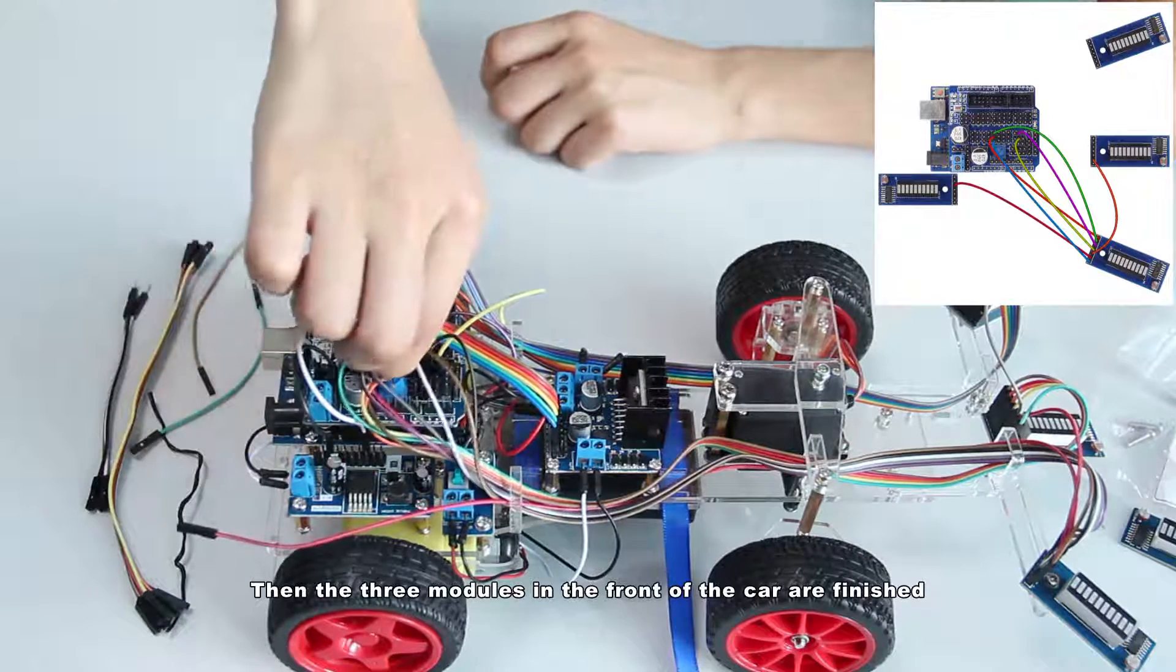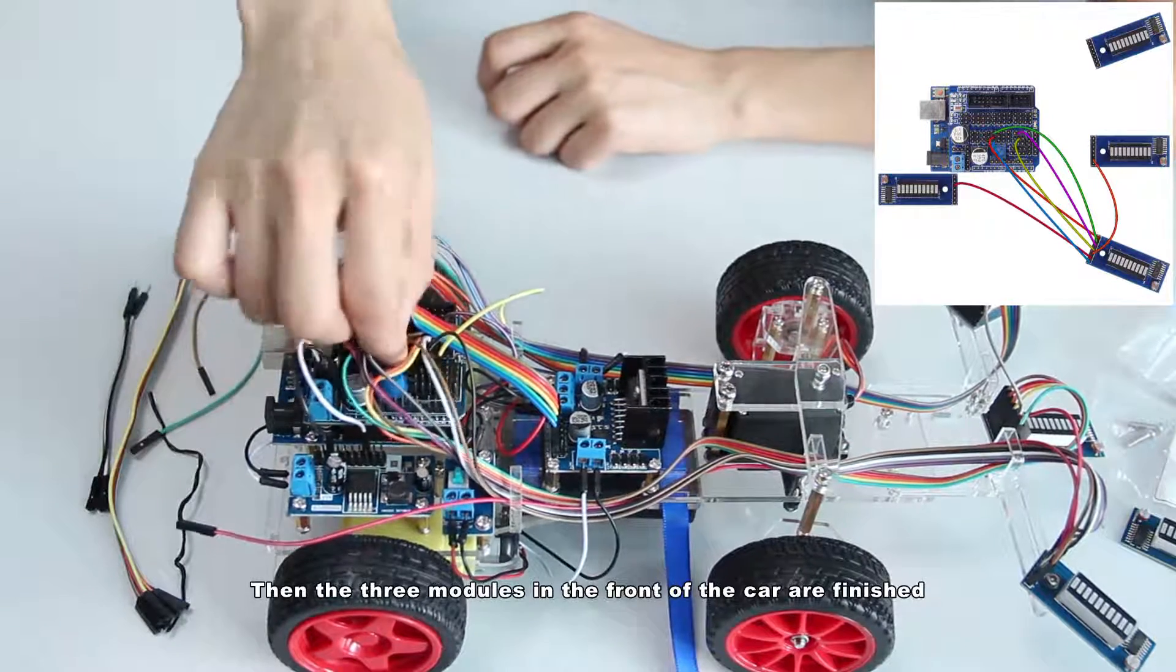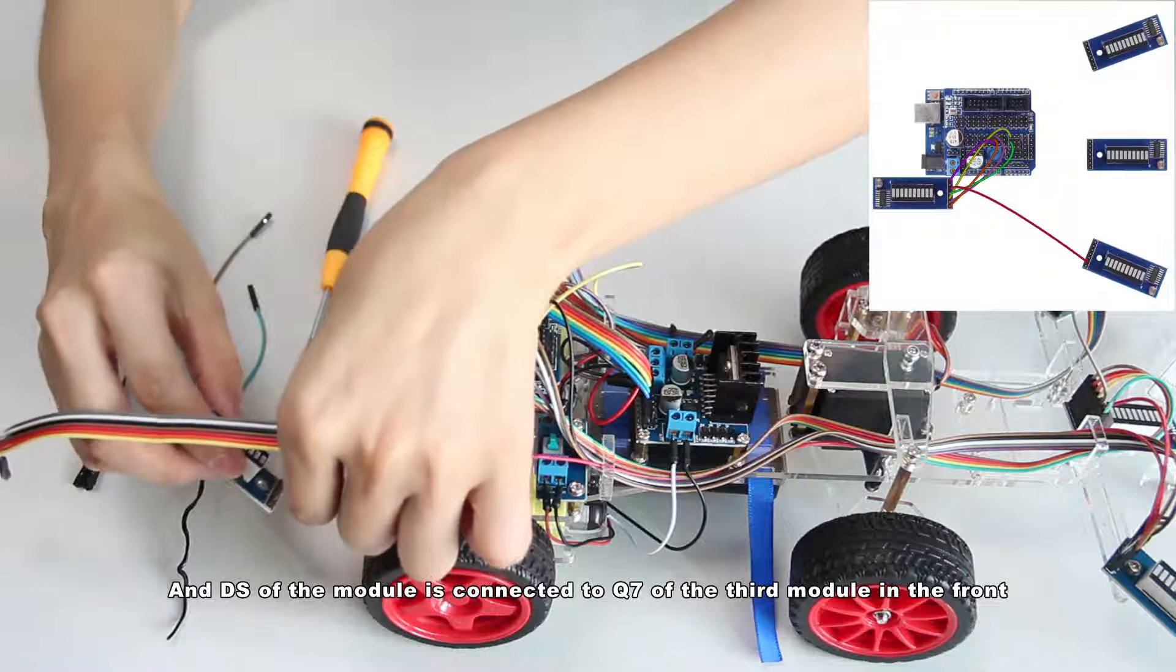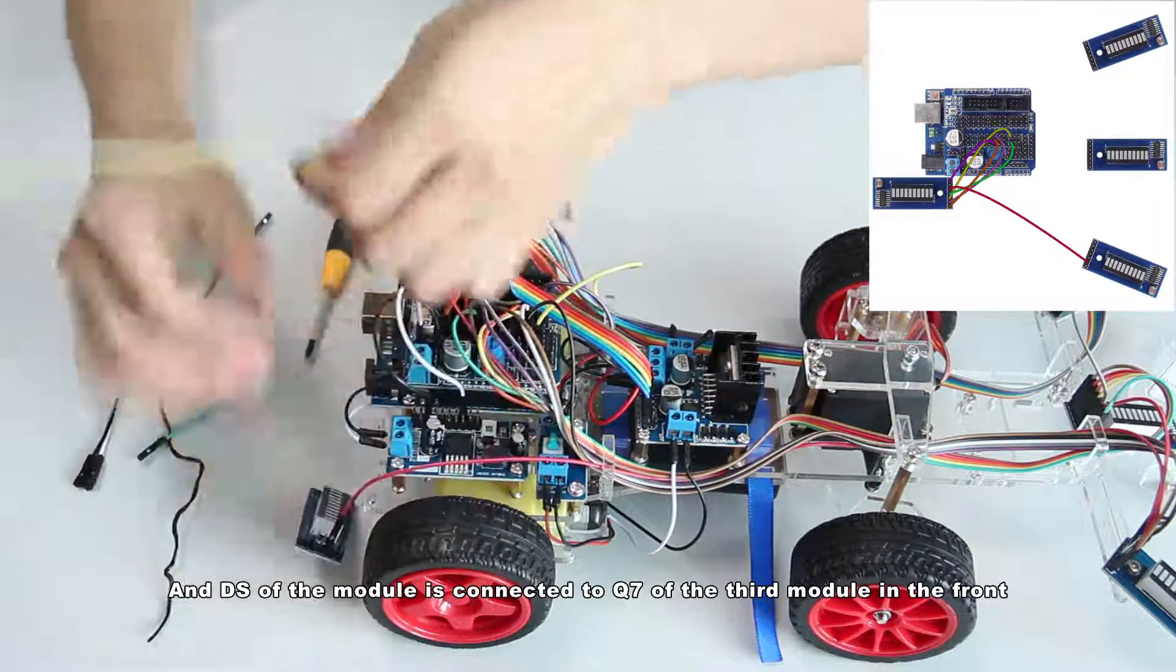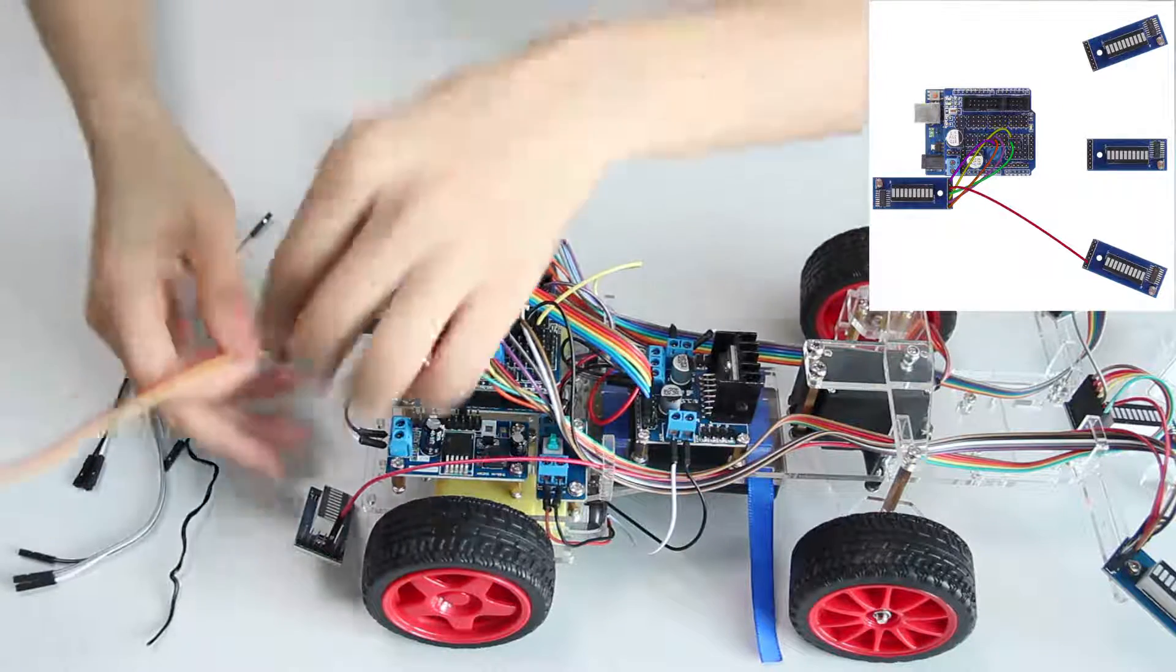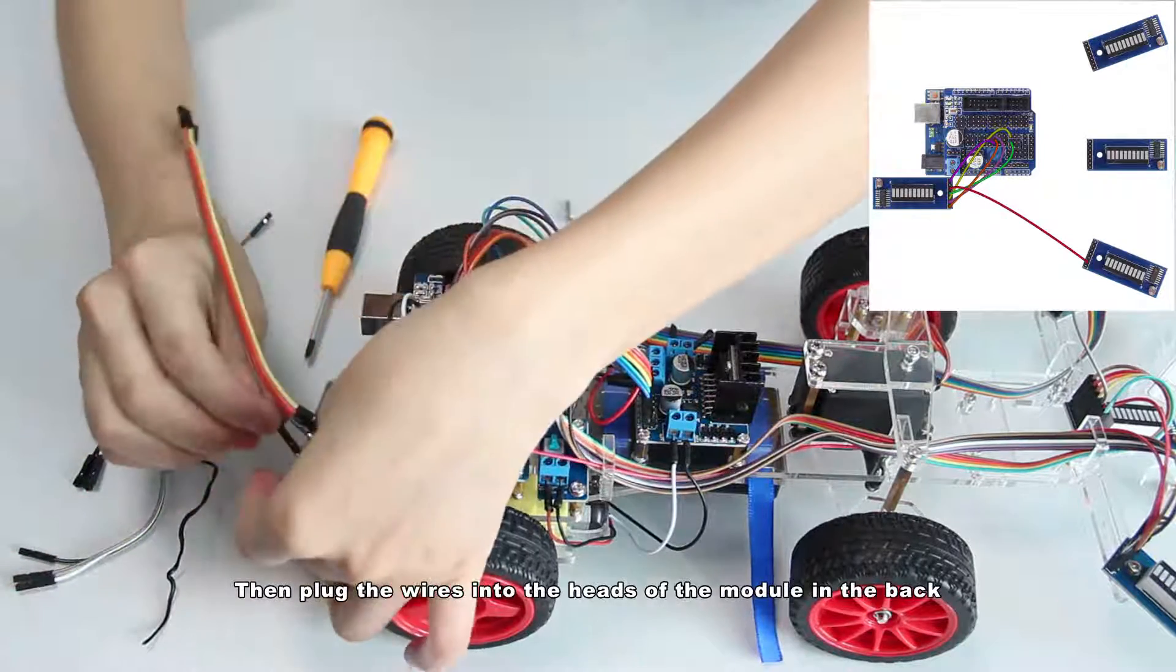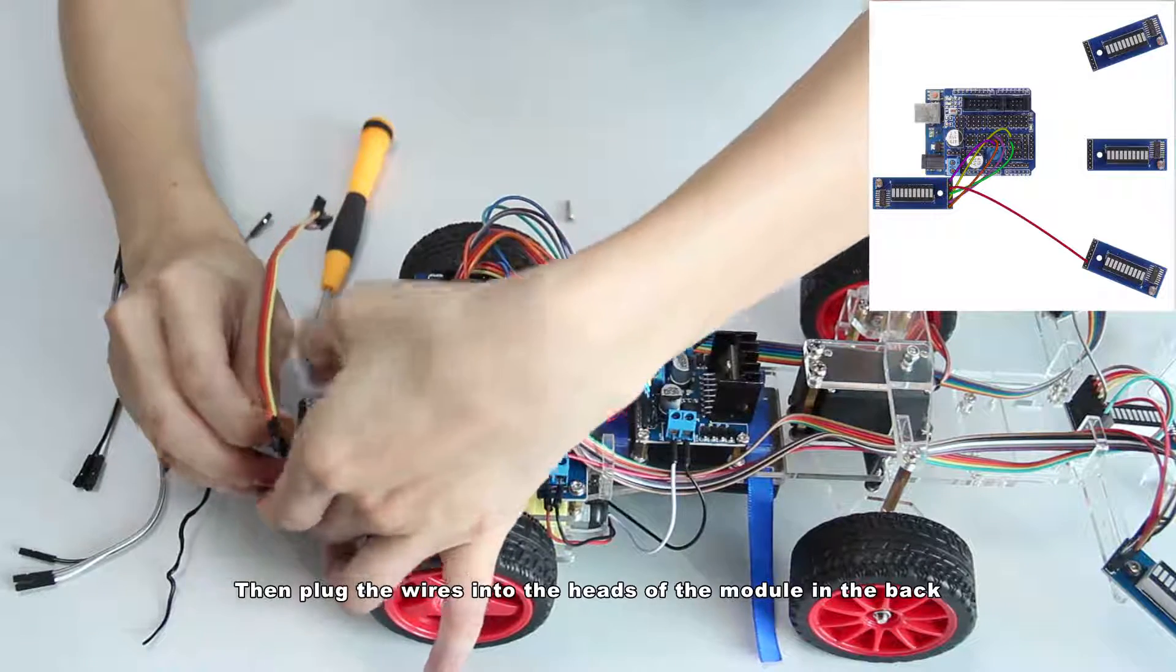Then the three modules in the front of the car are finished and DS of the module is connected to Q7 of the third module in the front. Then plug the wires into the heads of the module in the back.